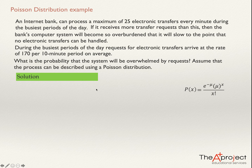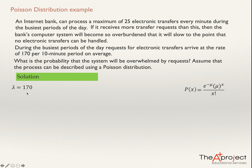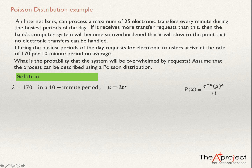Let's see what information we have. We have that 170 is the average in a period, so I'm going to write lambda equals 170. I use lambda for the average in the period of the information I have. But I notice that this lambda is in a 10 minute period, so this lambda is not necessarily the one I need to use here. The one I need to use is mu equal to lambda times t, where t is the number of periods that appears in the question.